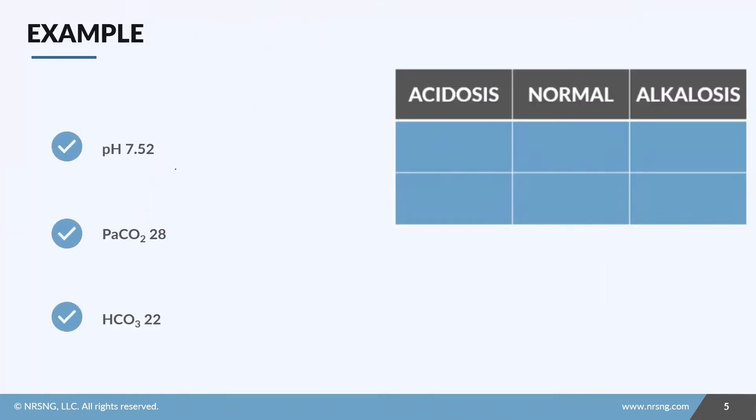So let's work through some examples and then we'll look at compensation as we go. So step one, pH 7.52, it's high. So it is alkalosis. I'll write pH in that top box. PaCO2, it is low. So it is also alkalosis. So I'll write CO2 in this box. Bicarb of 22, that is normal. So I will write the bicarb in this box. So step two is done already. I see that my source is the CO2 and therefore this is a respiratory alkalosis.